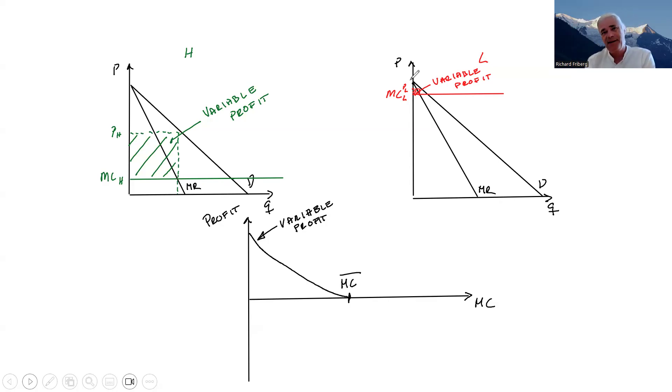So if marginal cost is this high, you will not be making any variable profits. Your costs are higher or just as high as whatever the single consumer that has the highest willingness to pay. But if you're luckier than that, you're getting lower marginal cost draws, then you will be making some profits.